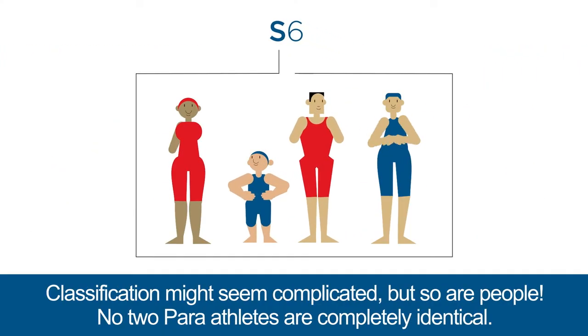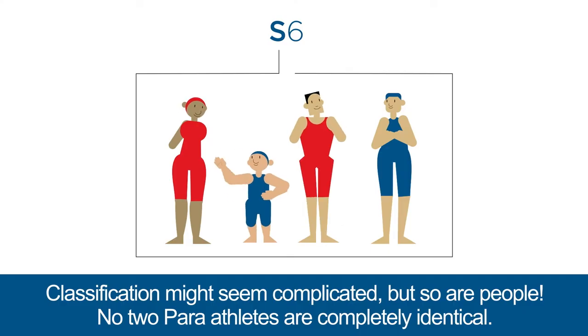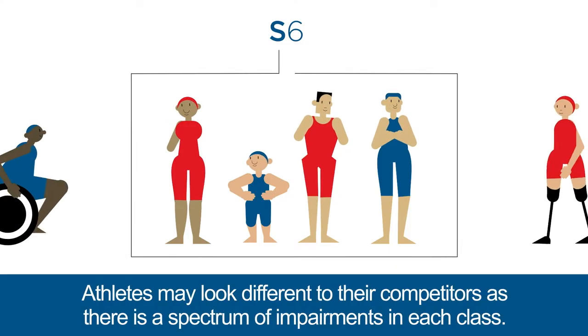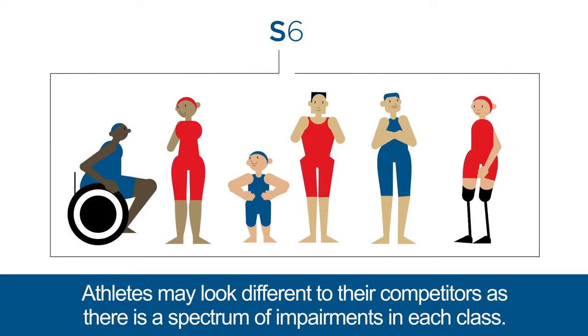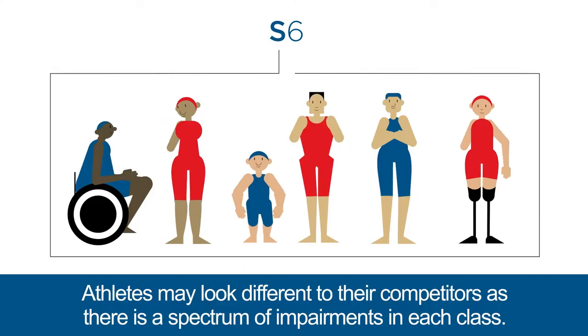Classification might seem complicated, but so are people. No two para-athletes are completely identical. Athletes may look different to their competitors, as there is a spectrum of impairments in each class.